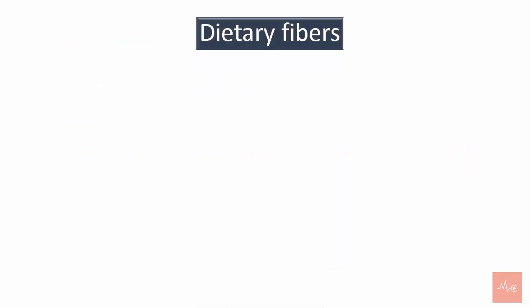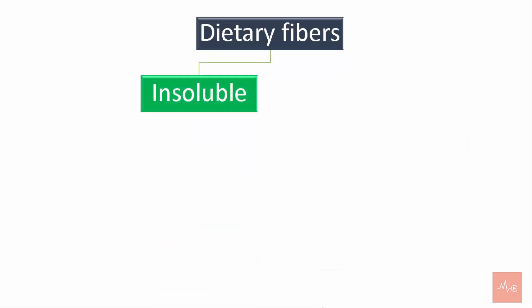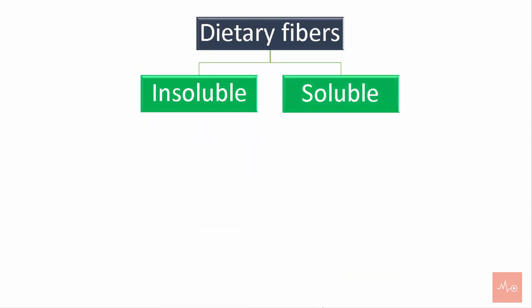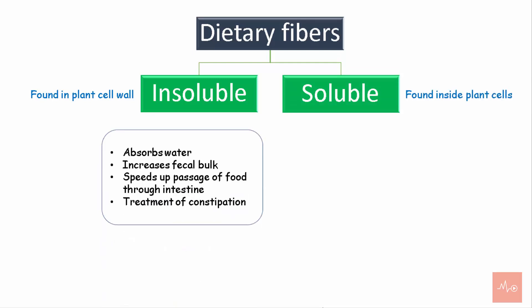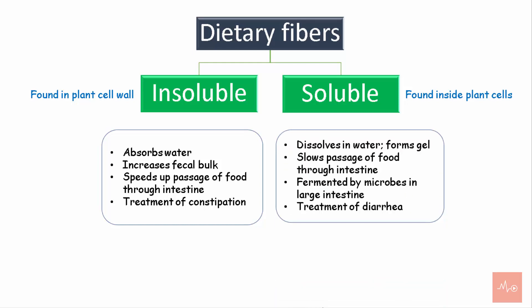Dietary fibers can be divided into two categories: insoluble and soluble. The insoluble fibers are found in plant cell walls, while the soluble fibers are found inside the plant cell. Insoluble fibers absorb water and increase the fecal bulk; they also speed up the passage of food through the intestine and are recommended in the treatment of constipation. Soluble fiber dissolves in water and forms a gel, slows the passage of food through the intestine, does not increase the fecal bulk, and is recommended in the treatment of diarrhea.